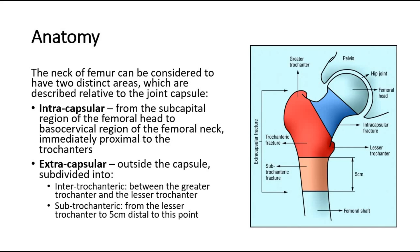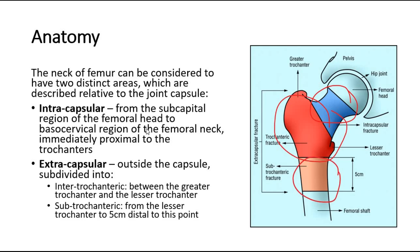Let's look at the brief anatomy. This picture shows the neck of femur. The neck of femur can be considered to have two distinct areas, which are described relative to the joint capsule: intracapsular and extracapsular. Extracapsular can be further divided into intertrochanteric and subtrochanteric. The blue color shows the intracapsular area, red color shows intertrochanteric, and orange shows the subtrochanteric area.